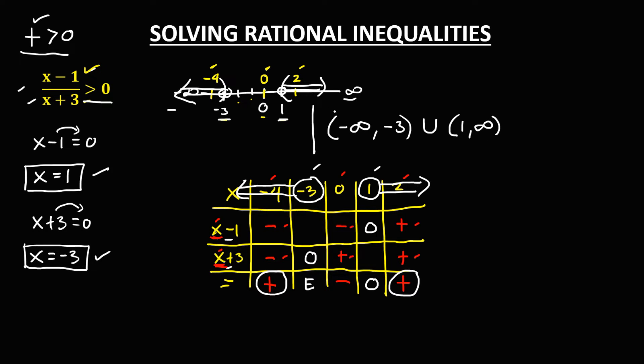So to write this one in notation form: from negative infinity to negative 3, then union, positive 1 to positive infinity. So this is now the solution of these rational inequalities.